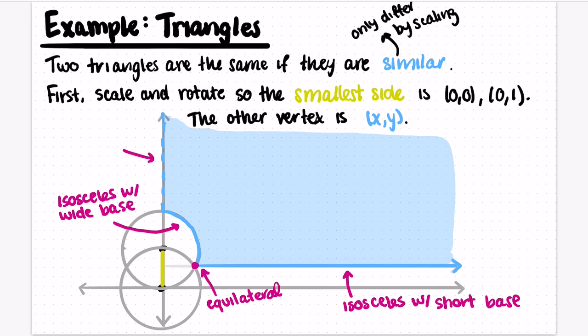What about points along this vertical dotted line? Well, these would correspond to three points that are in a line, so these actually aren't triangles. We say that these are degenerate. These points are not included in our moduli space.